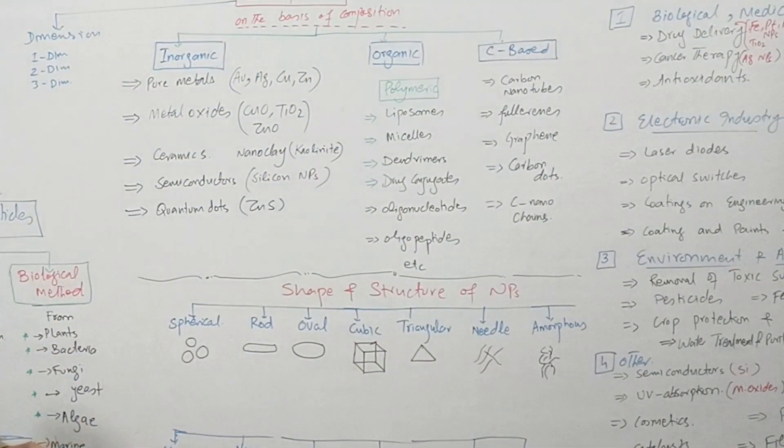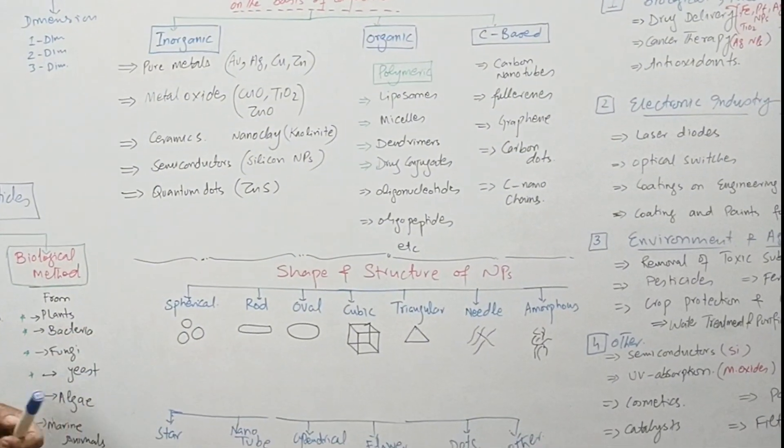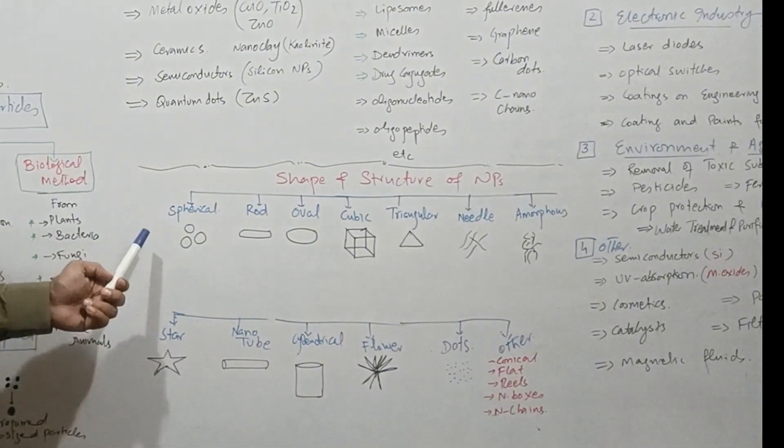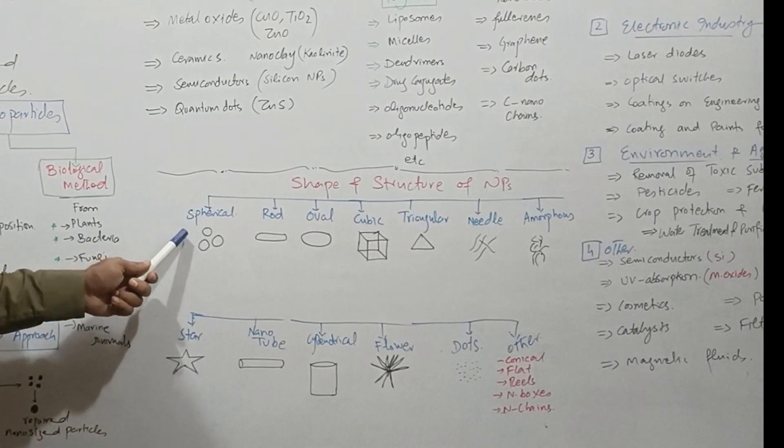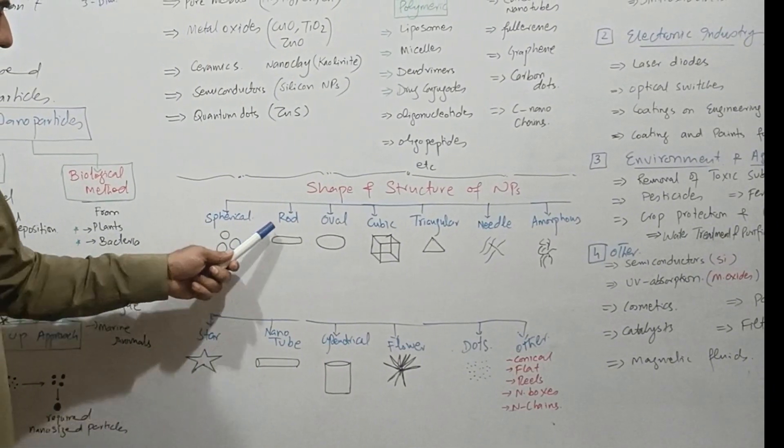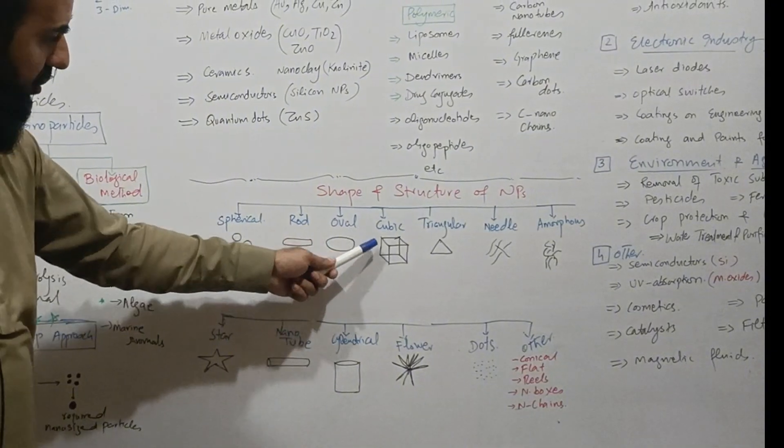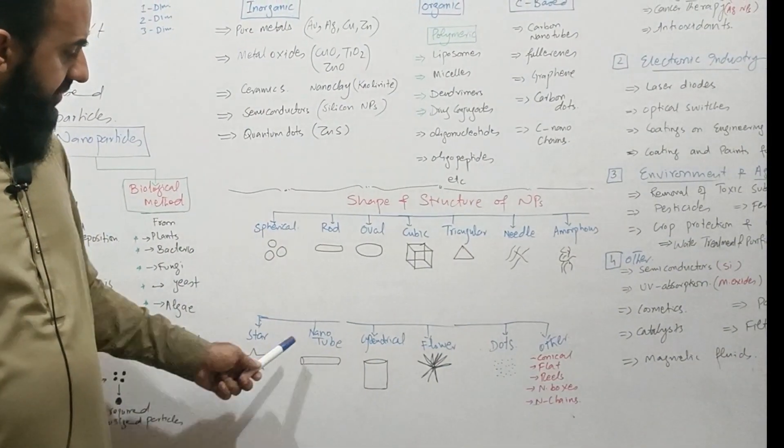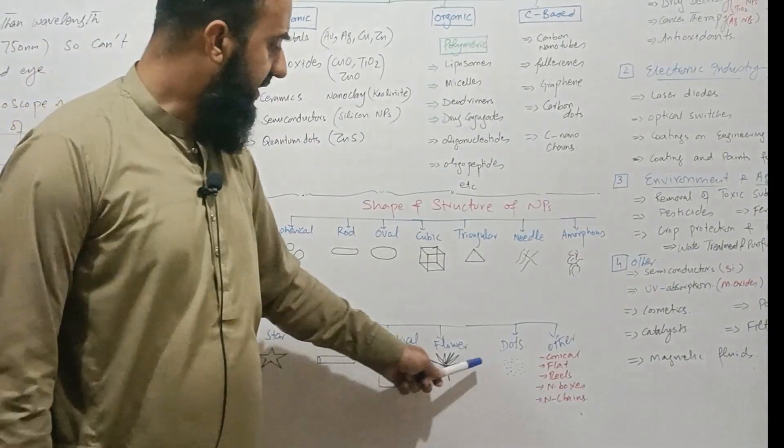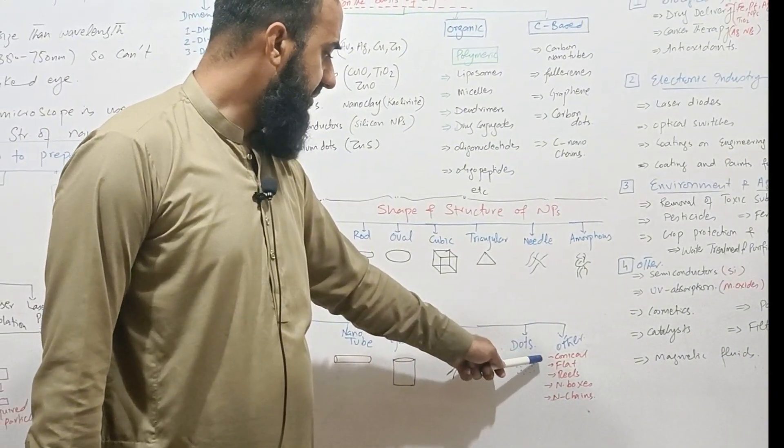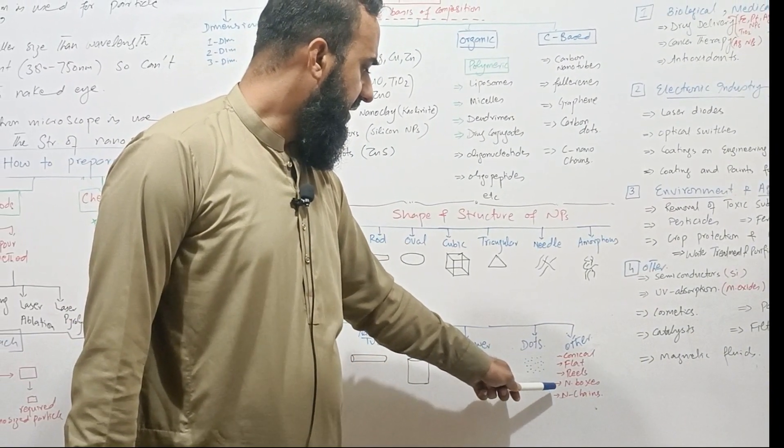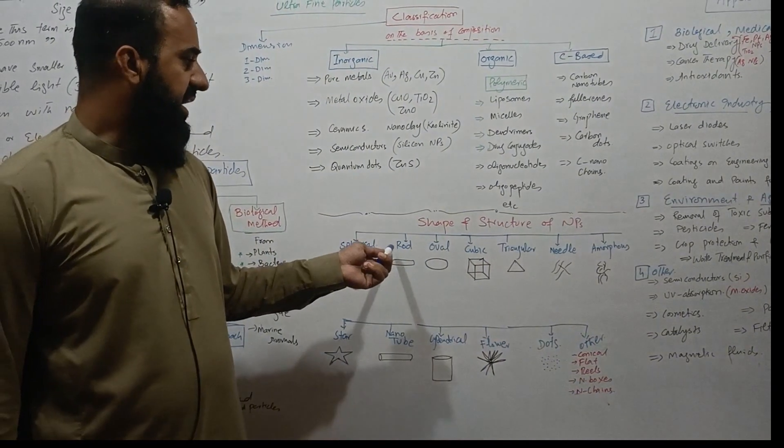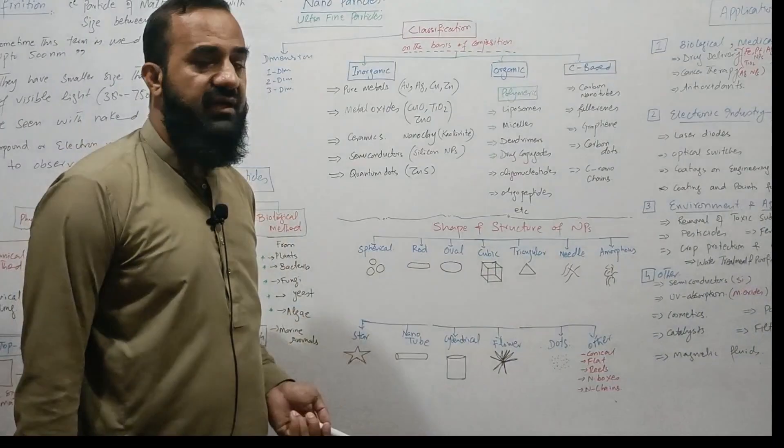When we observe the nanoparticles through a microscope, we see many kinds of shapes. A few of the shapes are given as these may be of spherical shape, rod shape, oval shape, cubic, triangular, needle shape, amorphous, star shape, nanotubes, cylindrical shape, flower and dots, and others may be conical, flat, helical, nano boxes and nano chains. So nanoparticles may exist in any of these forms.